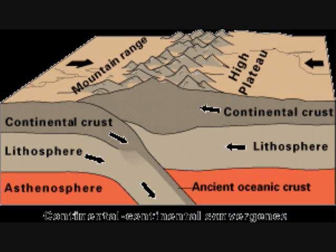The picture you are currently looking at is an example of a continental-to-continental convergent plate boundary. In a continental-to-continental plate boundary, the oceanic lithosphere is still involved. The oceanic lithosphere is subducted beneath the continental lithosphere. The second continental plate will then bring the two continents together through the process of subduction. The continental lithosphere is not subducted because it is less dense than the oceanic lithosphere.